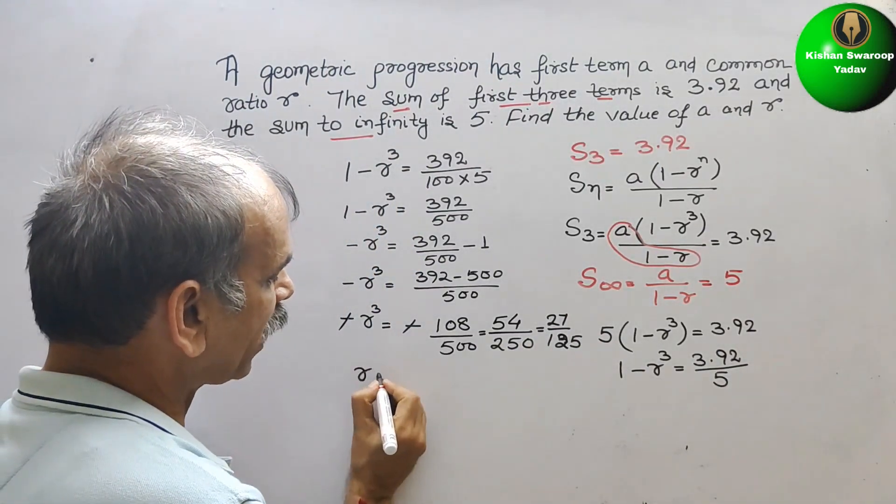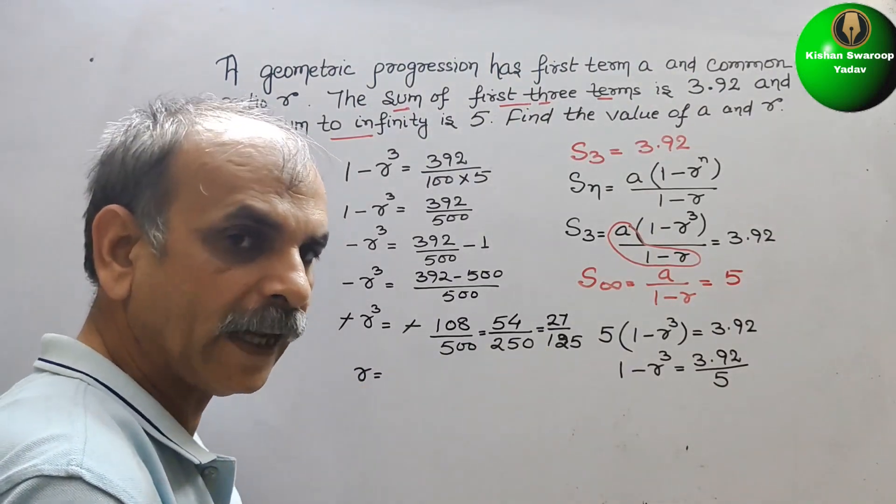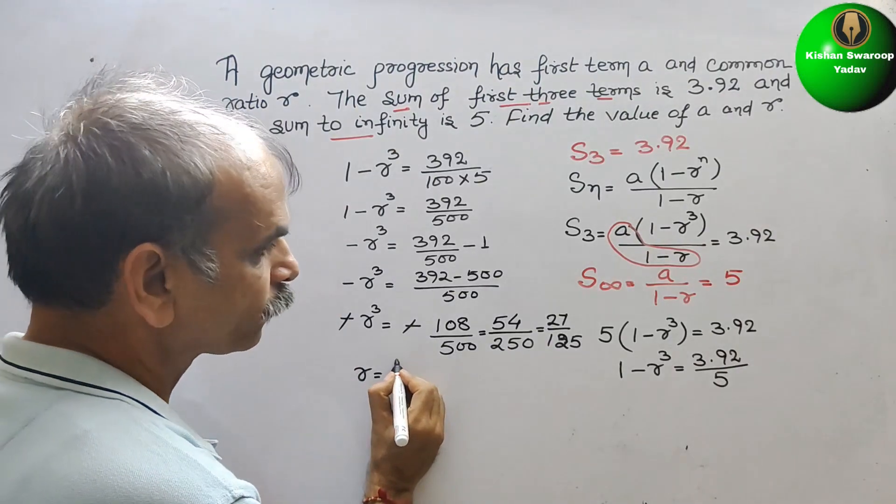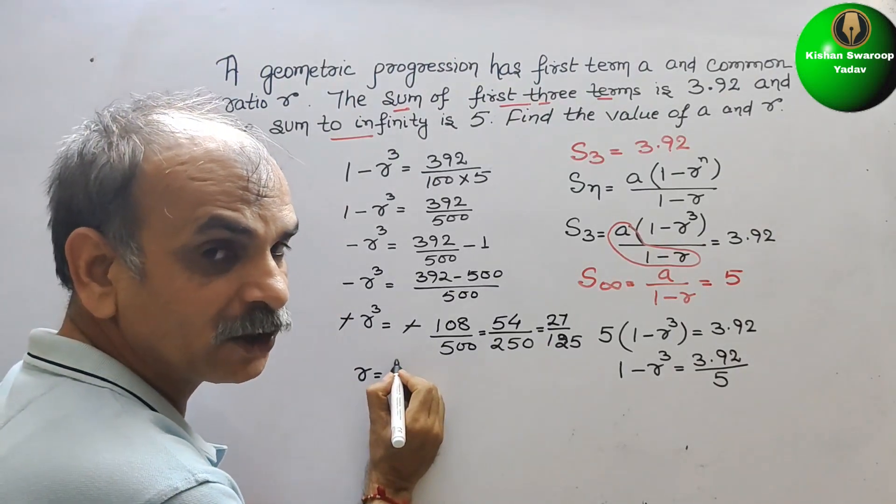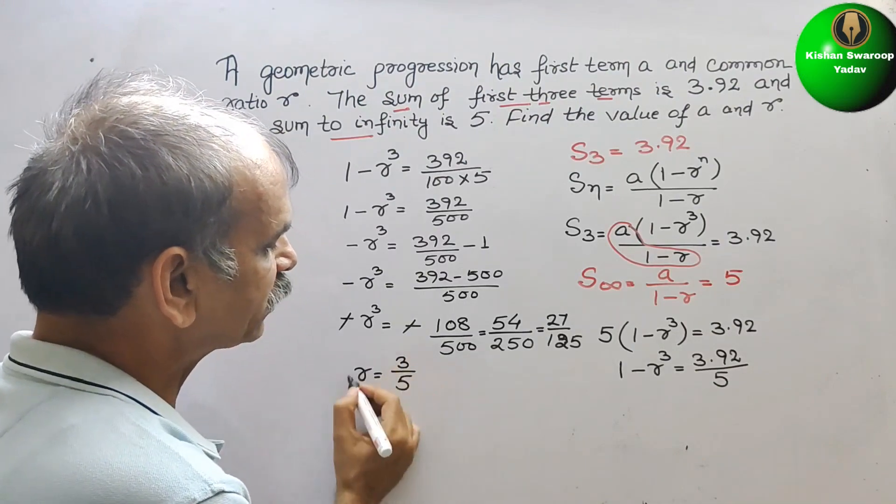So now R cube is 27 by 125. What is your R? R is cube root of this. That is nothing but cube root 27, that means 3 by 5. R is 3 by 5.